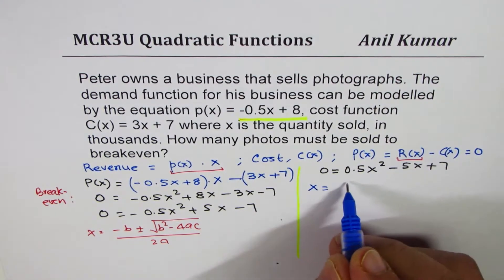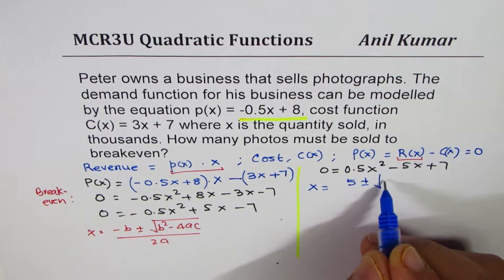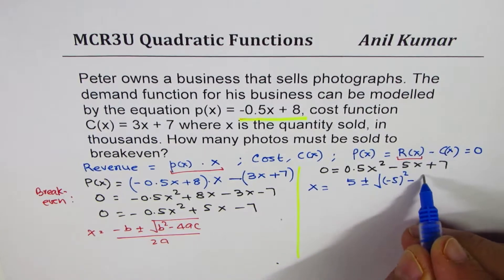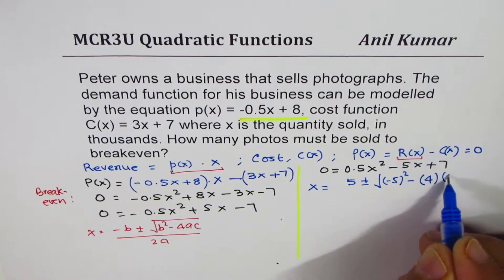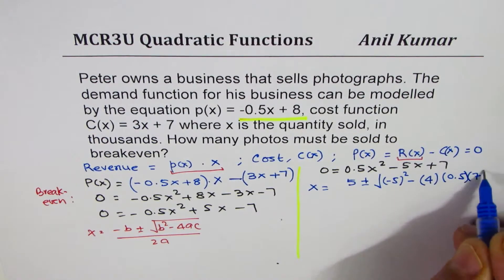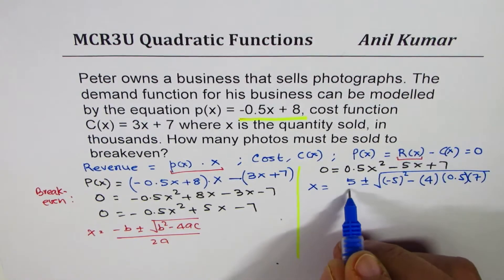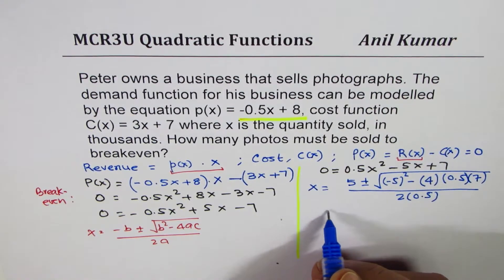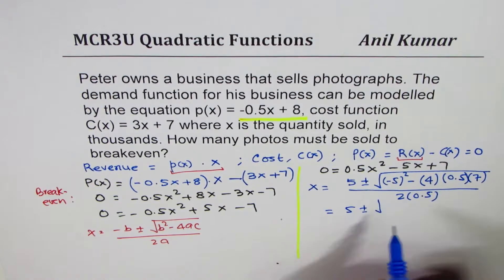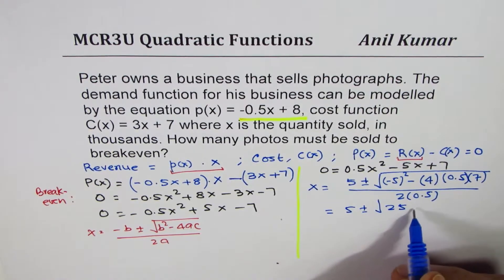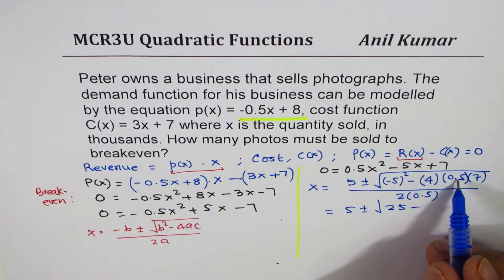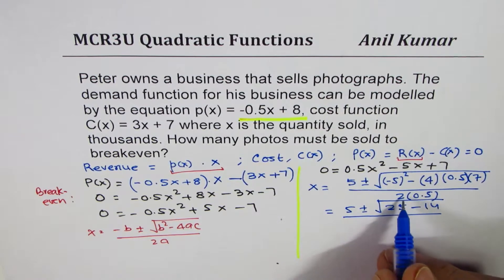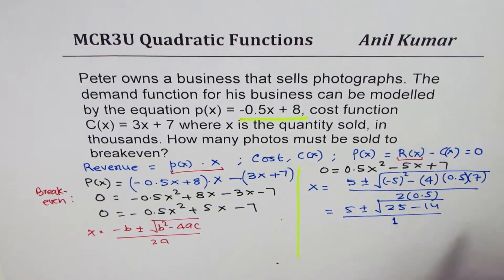So x is equal to minus b, which is 5, plus minus square of 5, which is, you can write minus 5 square, minus 4ac. So 4 times 0.5 times 7, divided by 2 times 0.5. 2 times 0.5 is 1. So you get 5 plus minus square root of 25 minus half of 4 is 2, 2 times 7 is 14. Divided by 2 times 0.5 is 1.